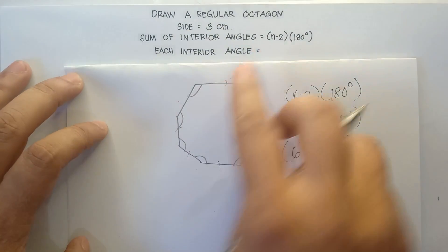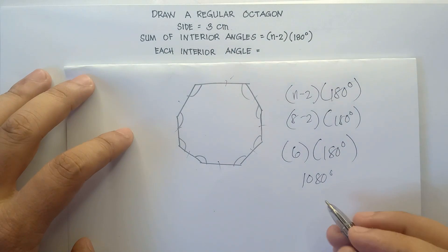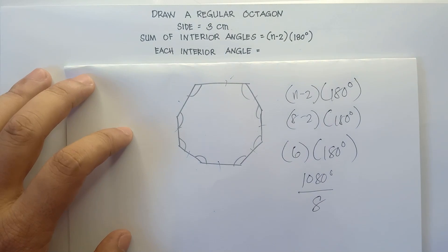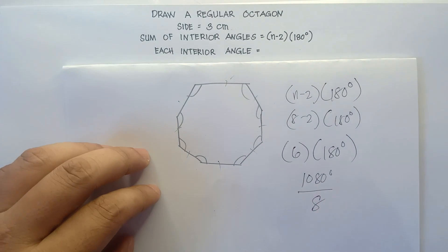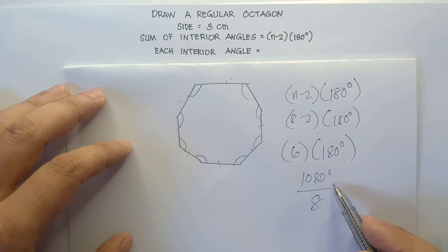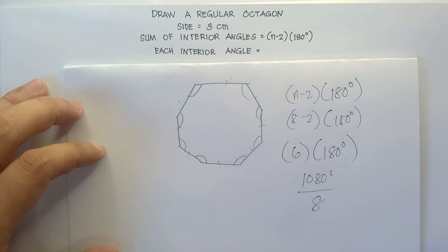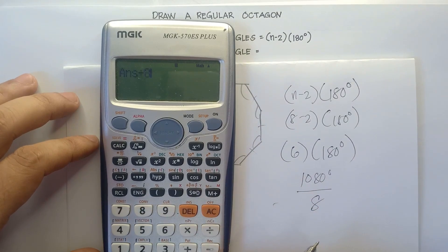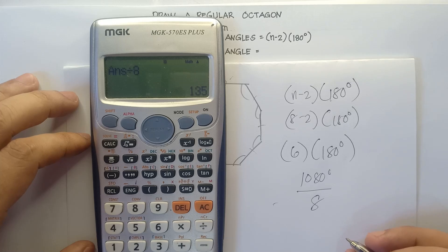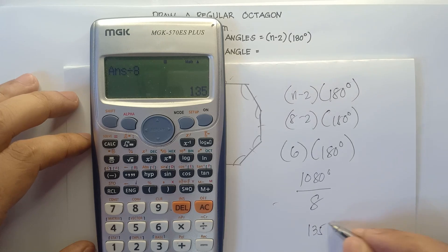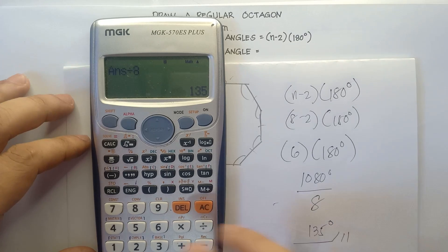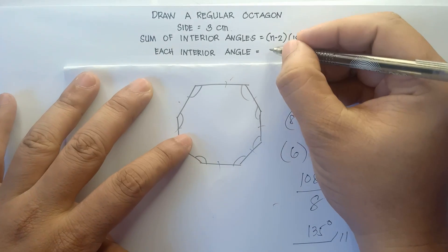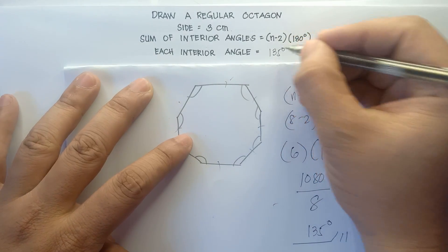Since this is a regular octagon, we divide 1,080 by 8 because we have 8 interior angles that must be congruent. 1,080 divided by 8 equals 135 degrees. So each interior angle is 135 degrees.